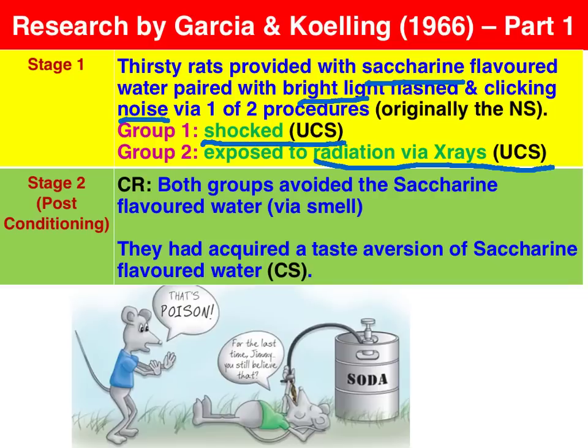In response to this, the rats developed a taste aversion to saccharine-flavored water. Their conditioned response was avoiding the saccharine-flavored water — all it required was the smell of it and they'd avoid it. So the saccharine-flavored water was the conditioned stimulus, which, after one trial, the rats avoided.